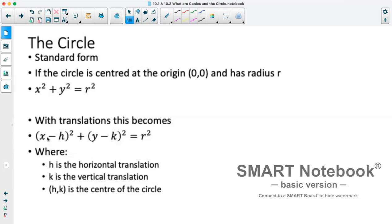And this equation becomes x minus h squared plus y minus k squared equals r squared, where h comma k is our center of the circle and our r is still our radius.